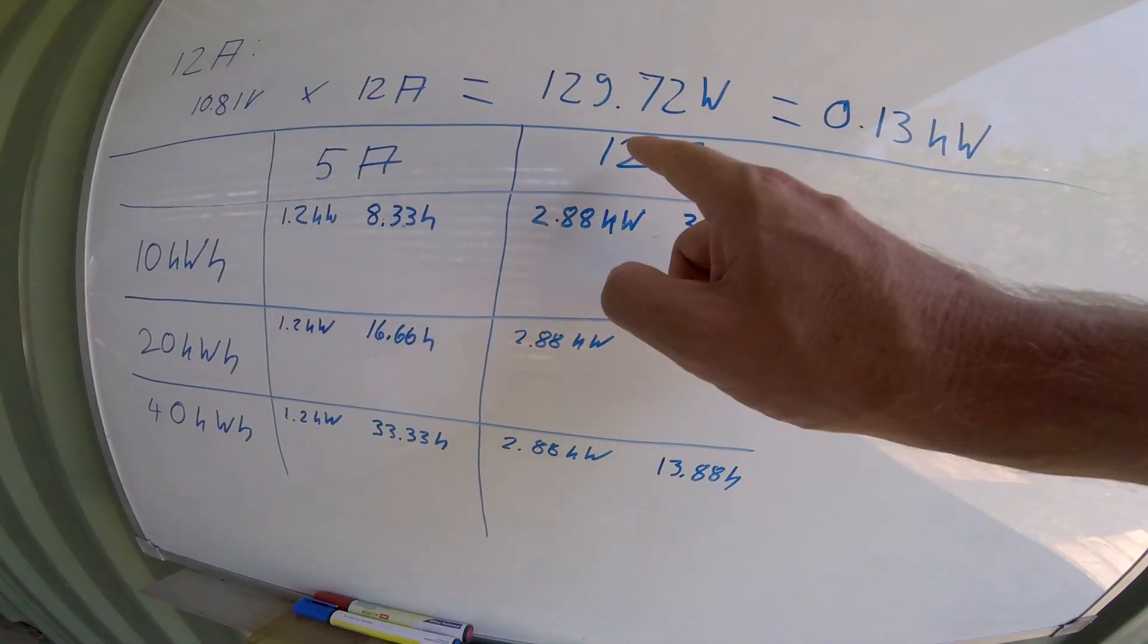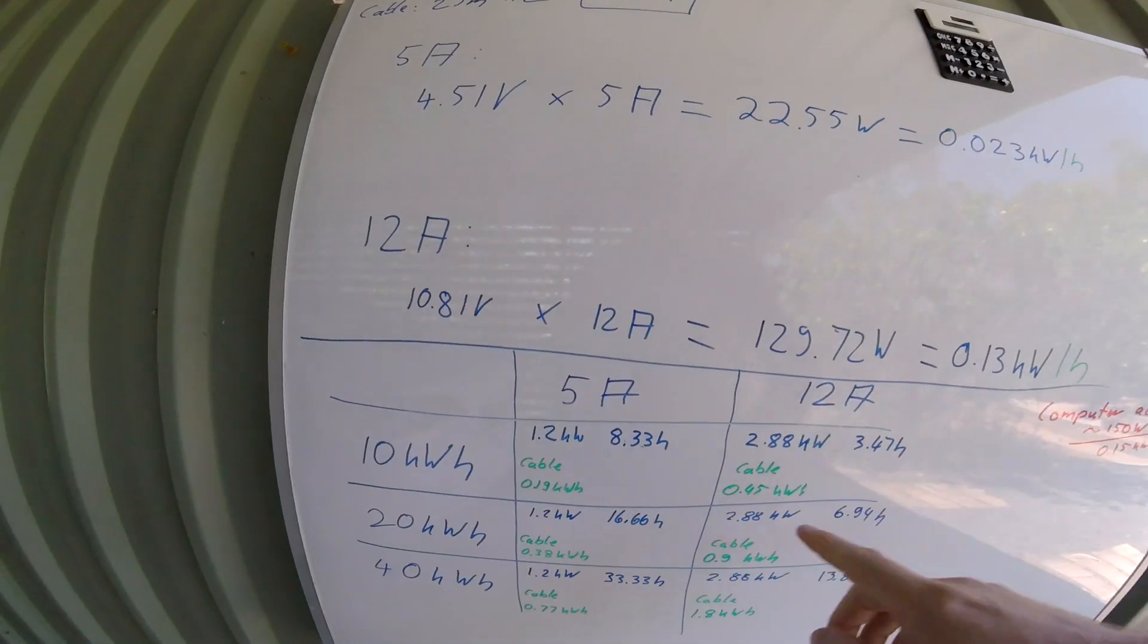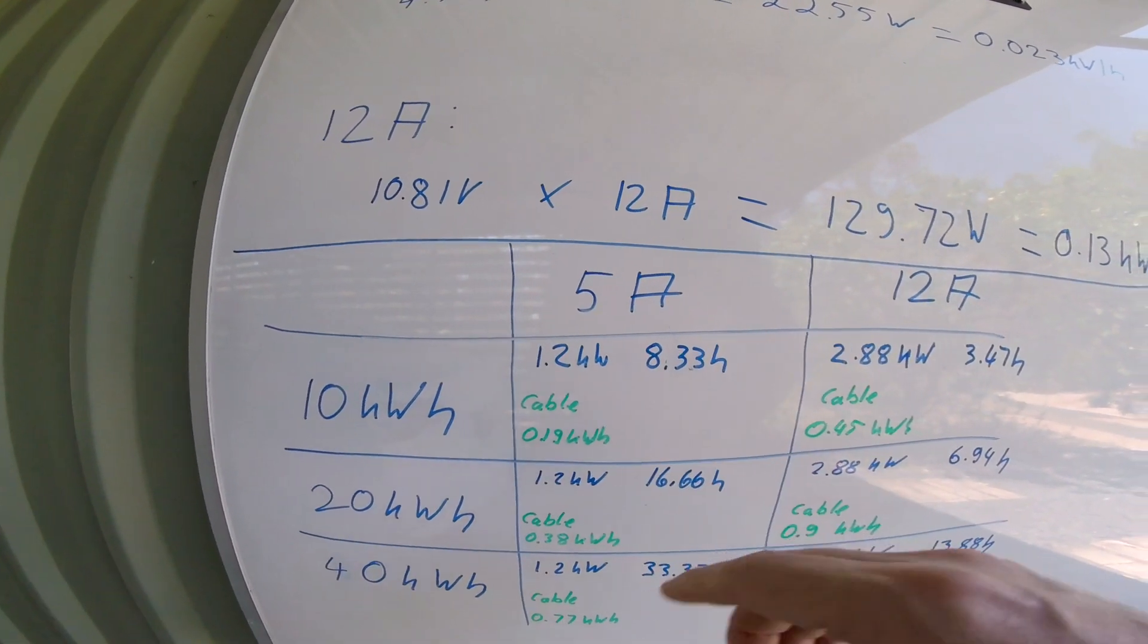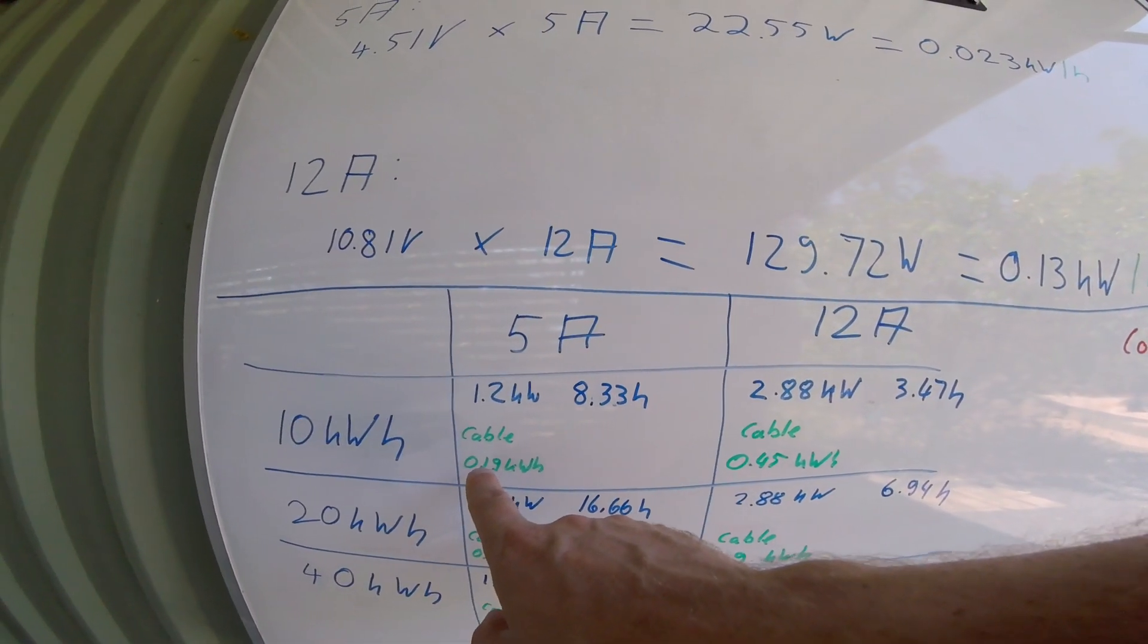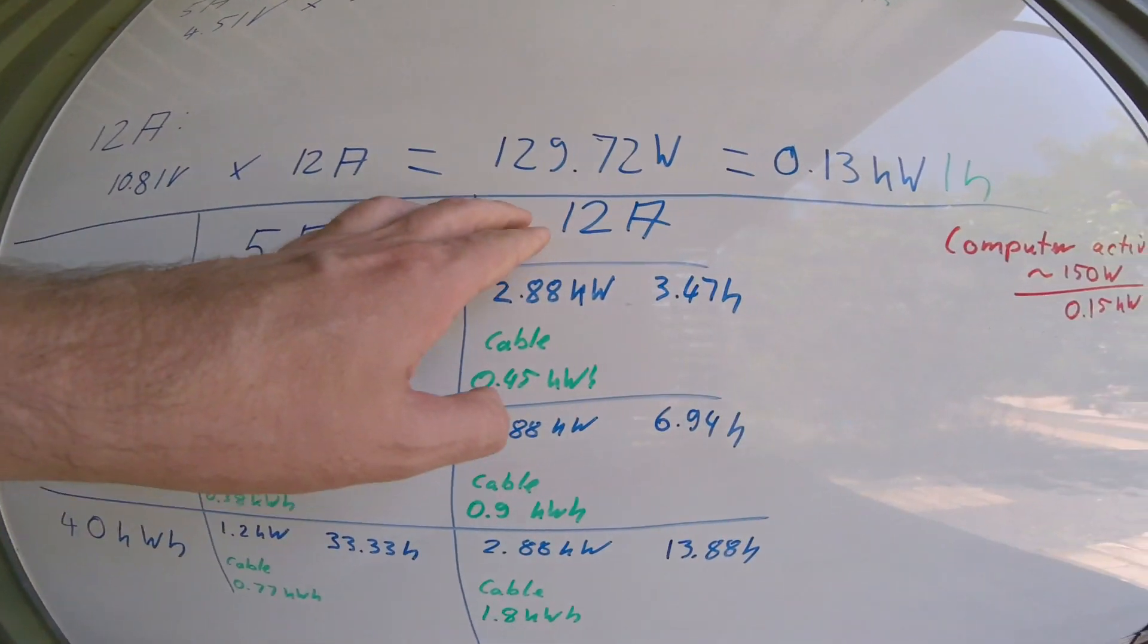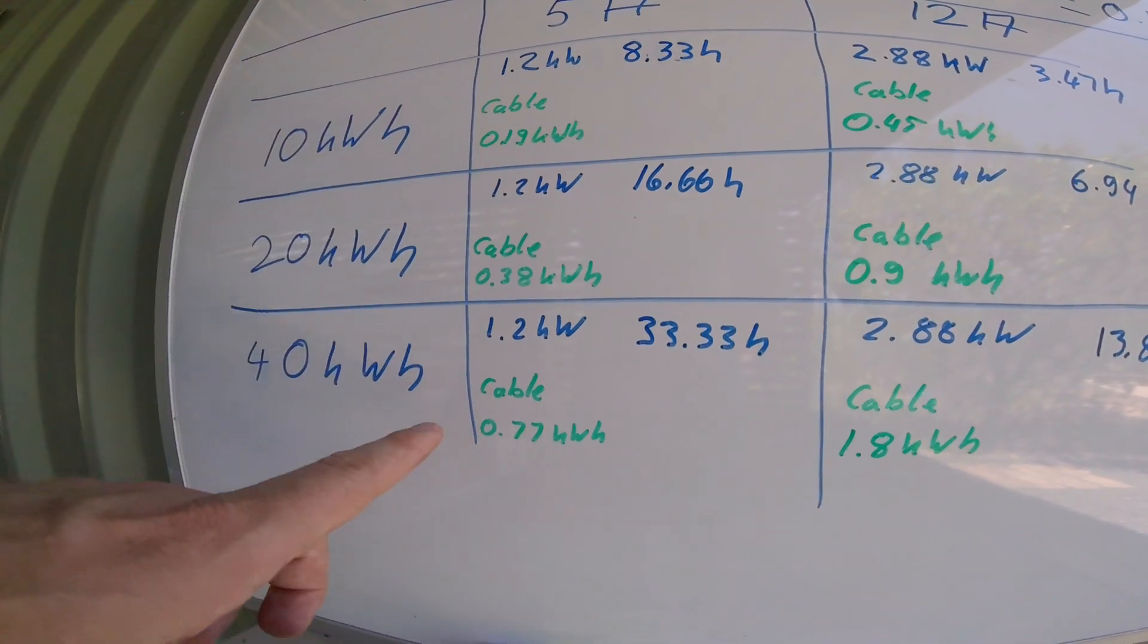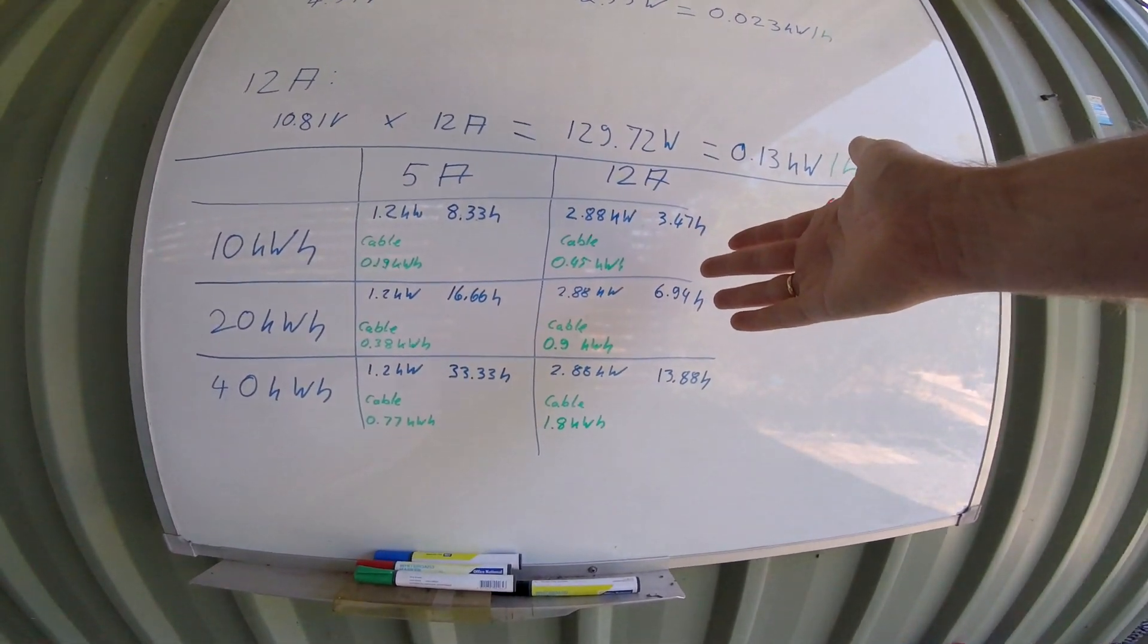So I have now calculated the cable losses in kilowatt hours into this table here as well. And we can see on 5 amp to charge 10 kilowatt hours, we are spending 0.2 kilowatt hours just on the cable loss. While on the 12 amp setting we are already at almost 0.5 kilowatt hours, so more than twice as much as on the 5 amp setting. And this goes all the way down to the 40 kilowatt. If you charge 40 kilowatt hours on 12 amp, we will lose 1.8 kilowatt hours on the cable, while we lose only 0.77 kilowatt hours on the 5 amp setting to charge 40 kilowatt hours. So from here it looks like the 5 amp is a clear winner to the 12 amp setting.